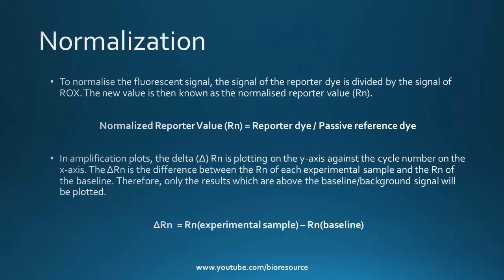The normalization using ROX is similar to the use of a reference gene in gene expression analysis, like the delta-delta-CT method. Instead of controlling the amount of template in the sample, ROX normalizes for attributes of the qPCR mixture such as volume differences and the presence of air bubbles. To normalize the fluorescent signal, the signal of the reporter dye is divided by the signal of ROX, and the resulting value is known as the normalized reporter value.